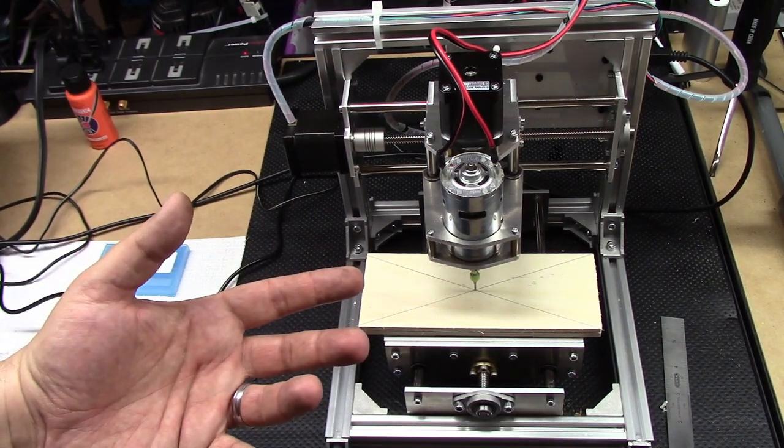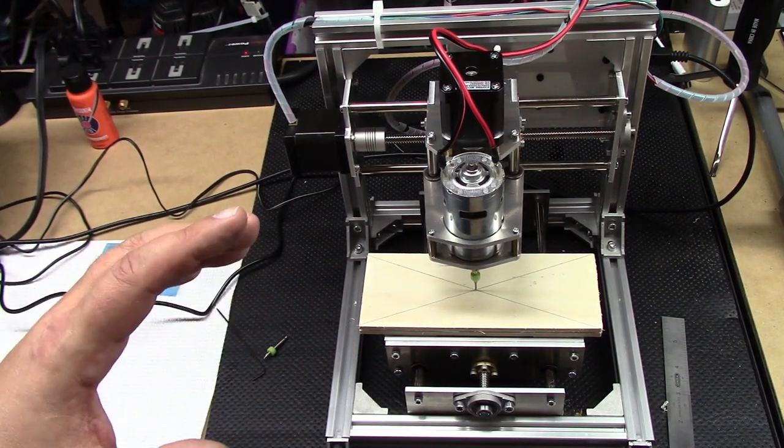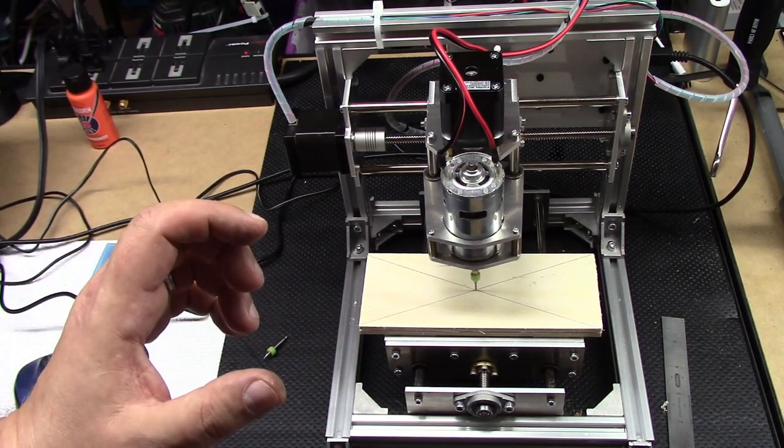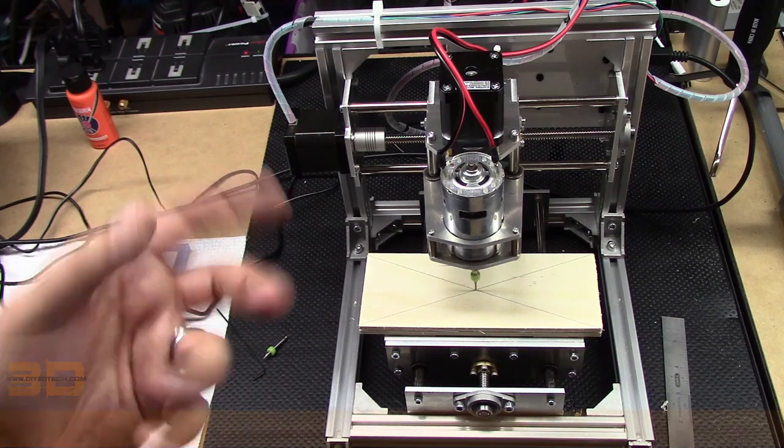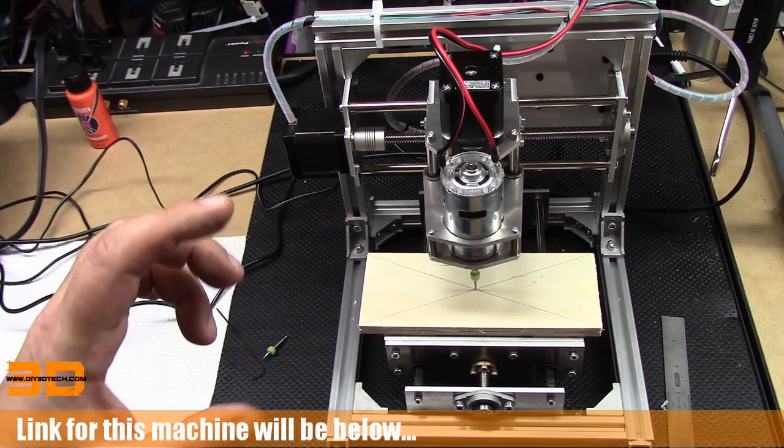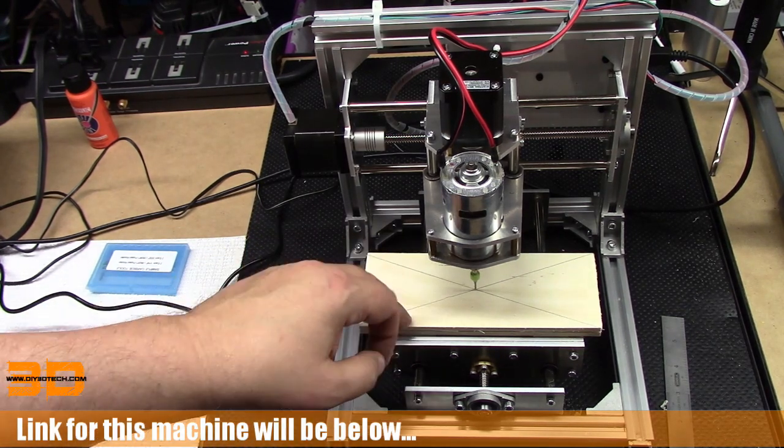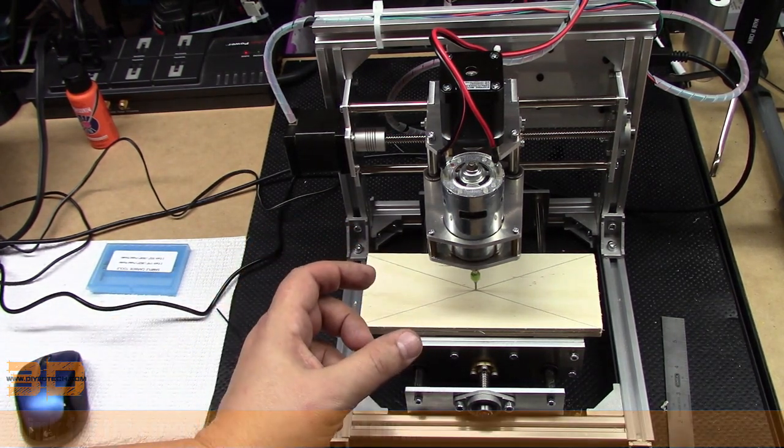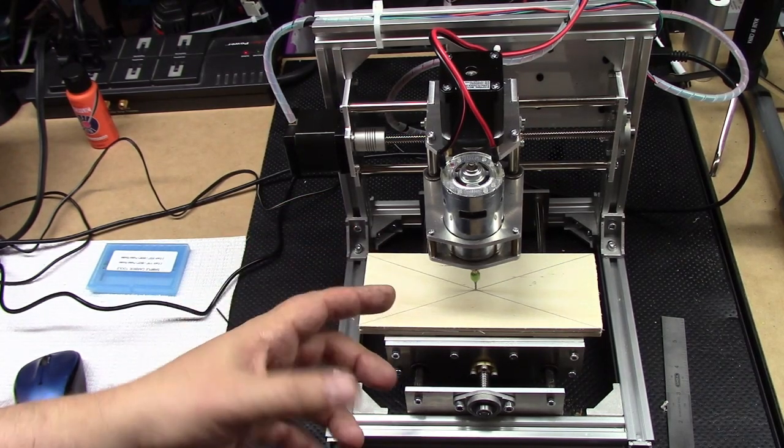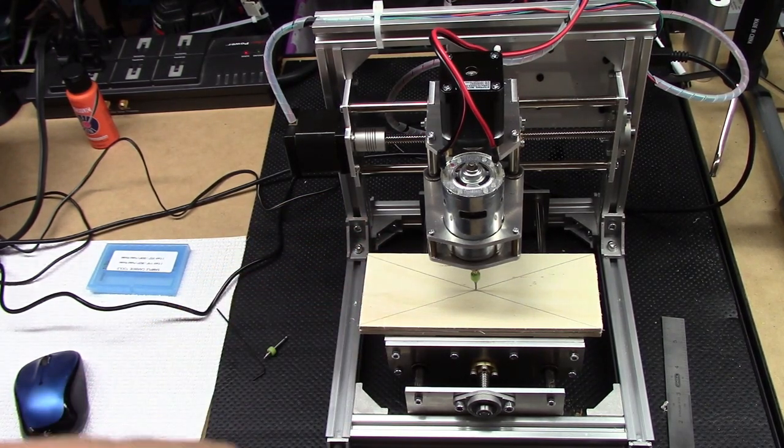So my wife ordered these stools online, and one of them came in with one of the struts underneath that has a knot and it's cracked along the lines of this knot. So what I'm going to do is use this CNC to cut out a little brace, about a 70 by 20 millimeter brace, to glue that up and make it solid again.